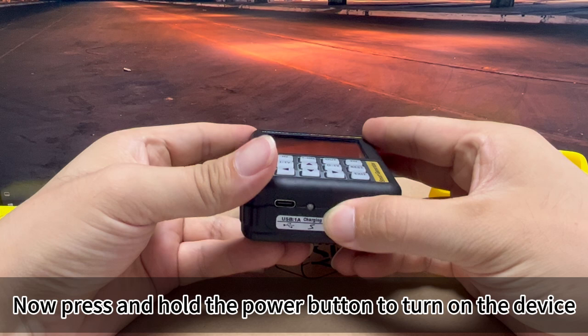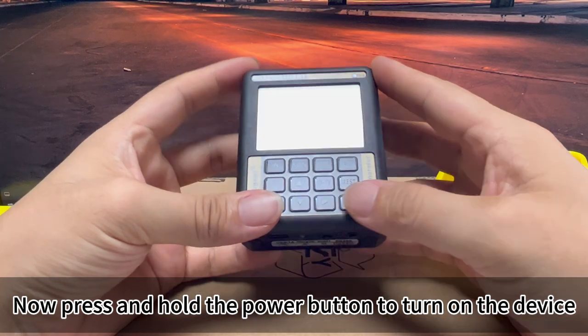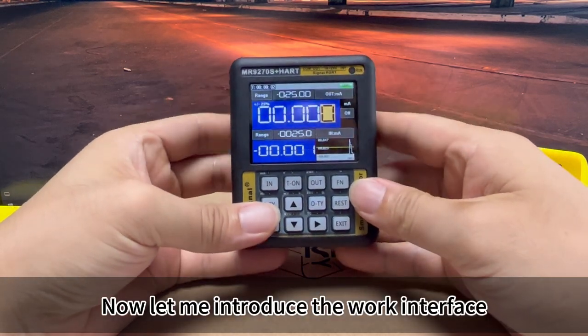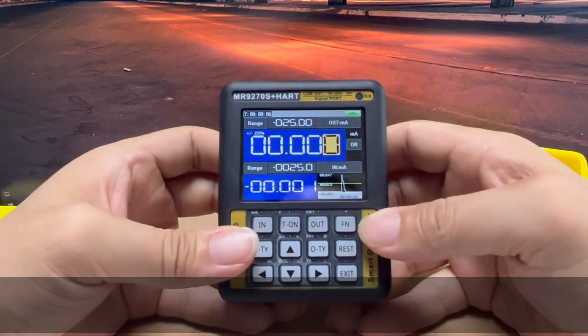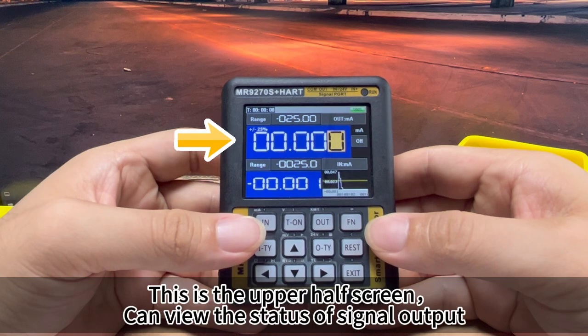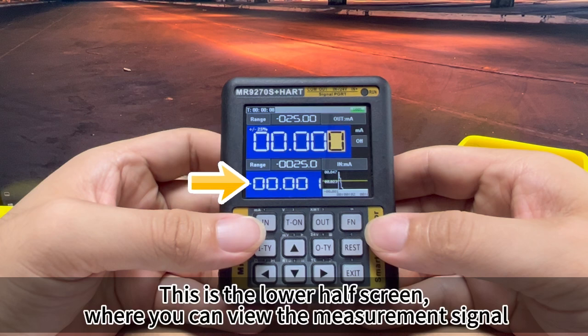Now press and hold the power button to turn on the device. Now let me introduce the work interface. The upper half screen can view the status of signal output. The lower half screen is where you can view the measurement signal.